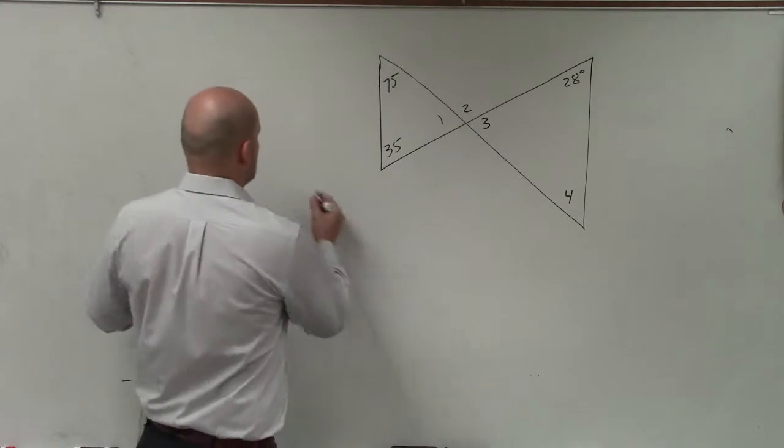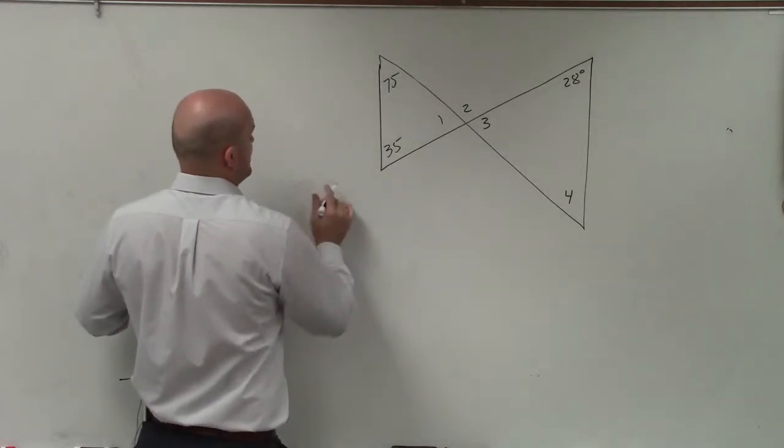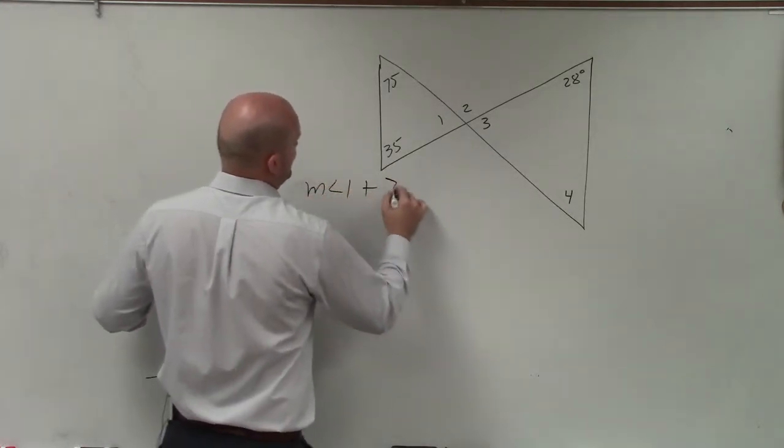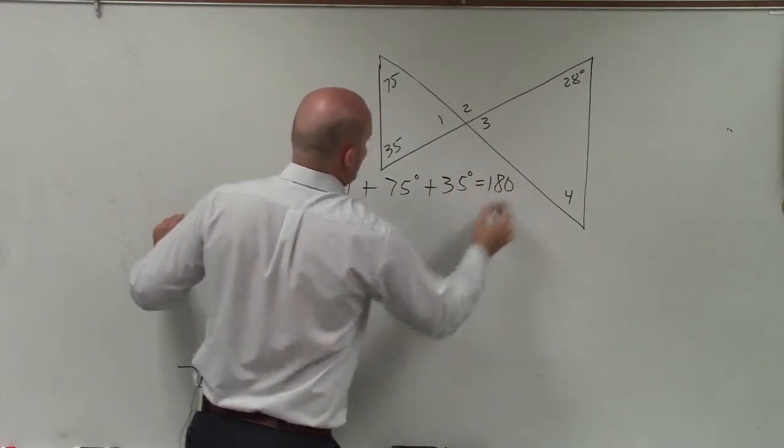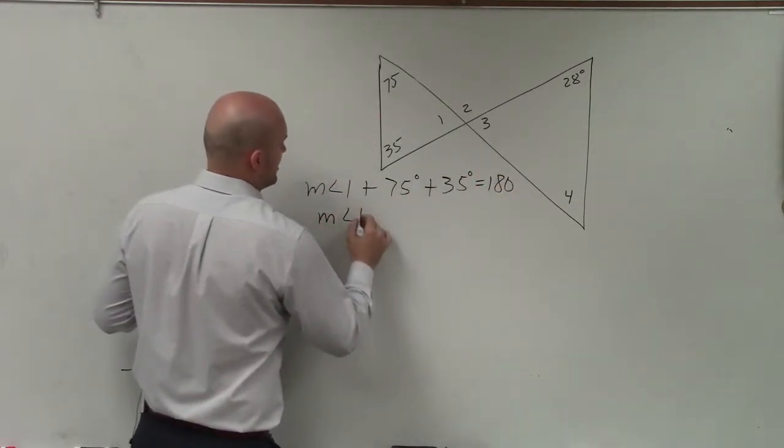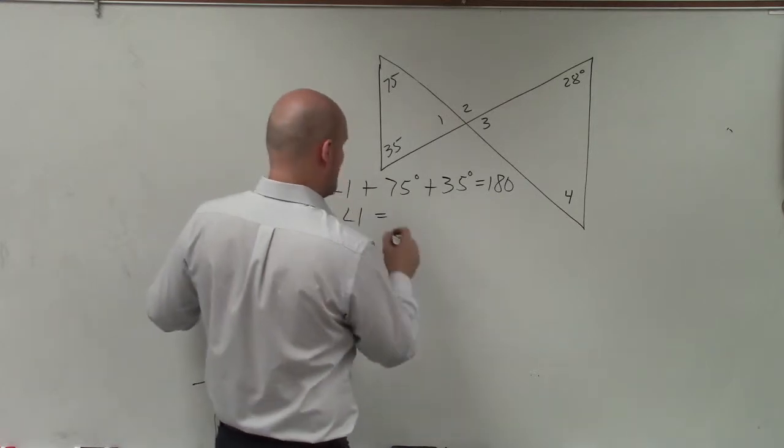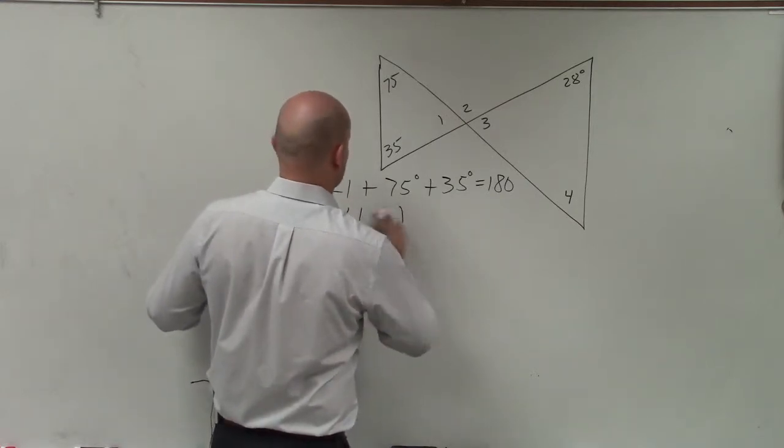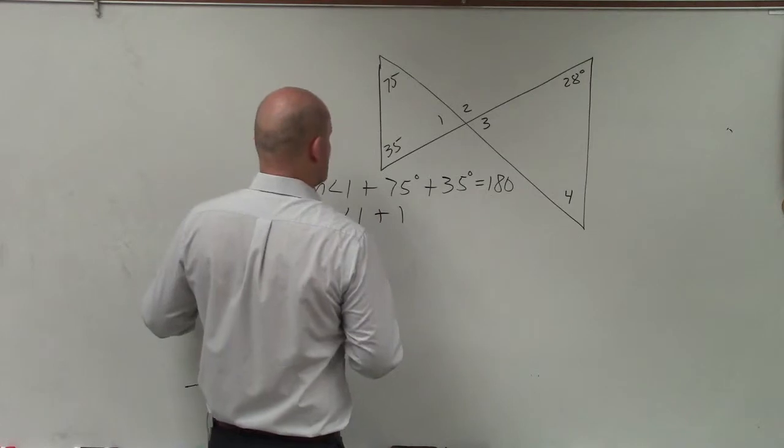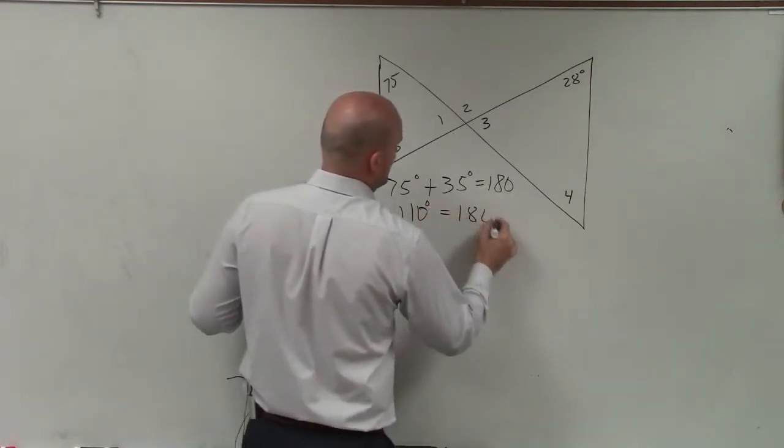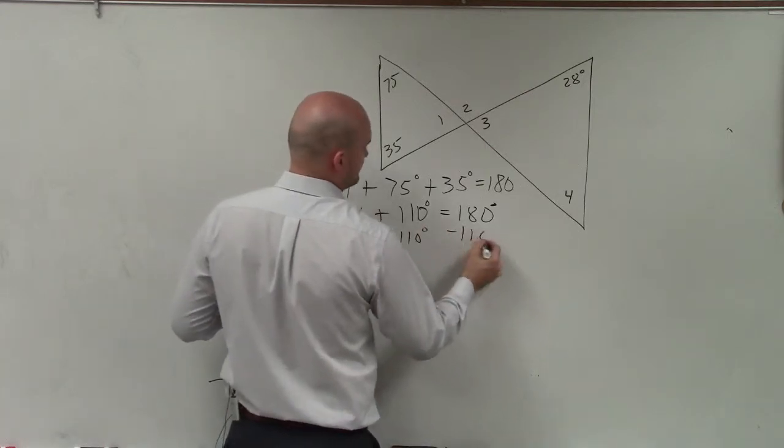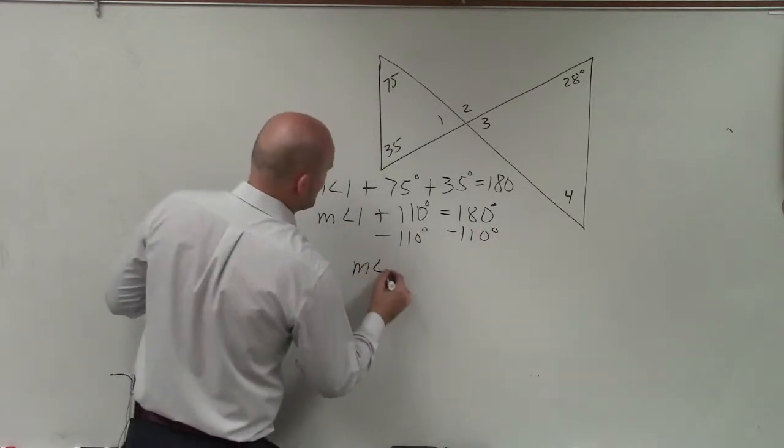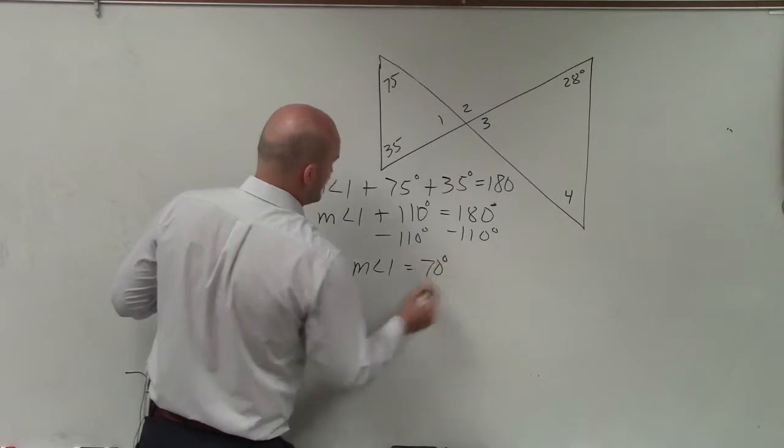So I'll say measure of angle 1 plus 75 degrees plus 35 degrees equals 180. Combine these two, measure of angle 1 equals 110. Jeez, I keep on doing that. Measure of angle 1 plus 110 degrees equals 180 degrees. Solve for measure of angle 1, and I see measure of angle 1 equals 70 degrees.